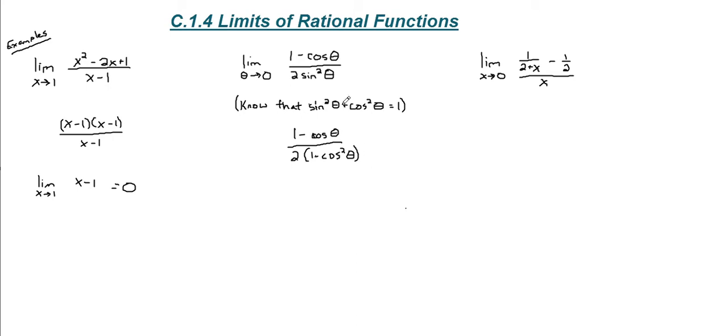Now what I did there is I just solved this identity for sine squared, and it's equal to 1 minus cosine squared. What we have is the difference of squares on the bottom.